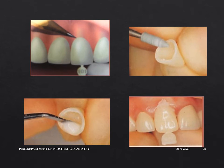This slide shows a provisional restoration where a prefabricated crown is first tried inside the patient's mouth for fit. The excess is trimmed and then it is luted in position with provisional cement.